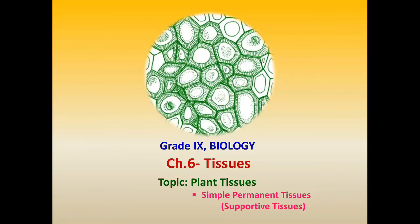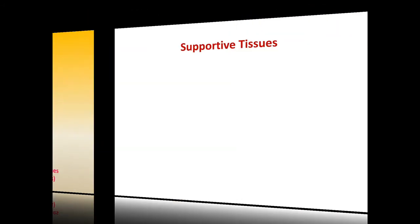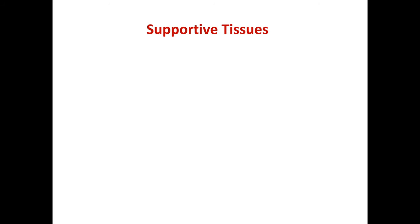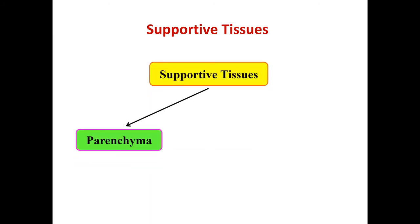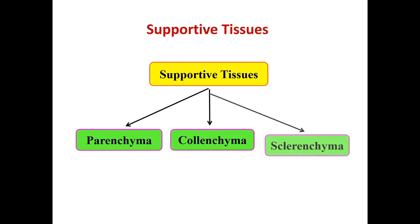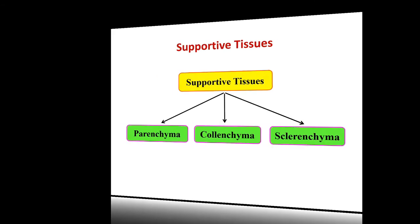Hello students, hope all of you are well. In the last lecture we discussed about the protective tissues in plants. Today I am going to explain about the supportive tissues in plants, which are the types of simple permanent tissues. As the name indicates, these tissues are supportive in function, and they are of three types: parenchyma, collenchyma, and sclerenchyma.